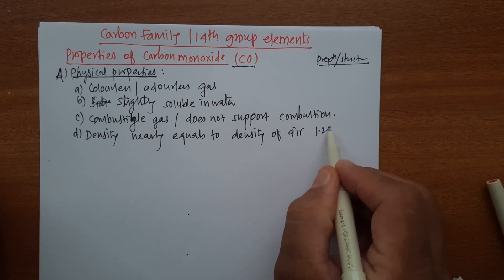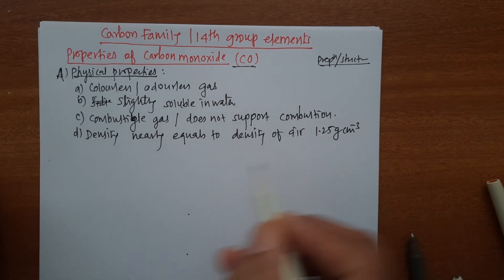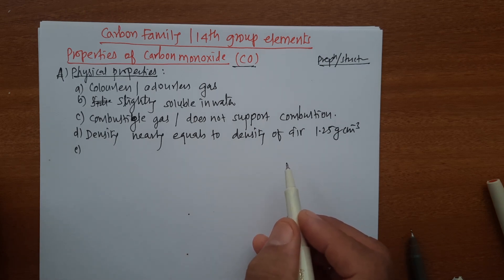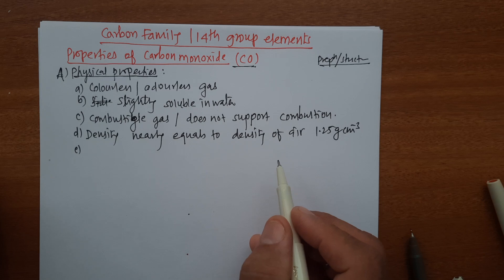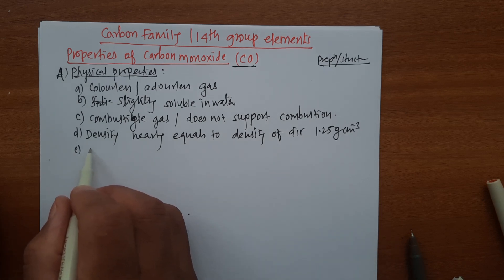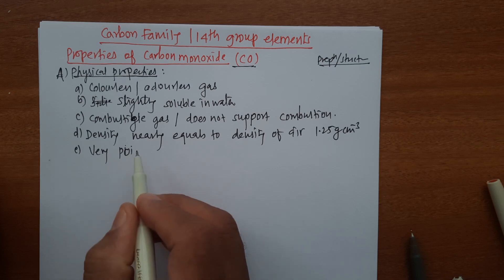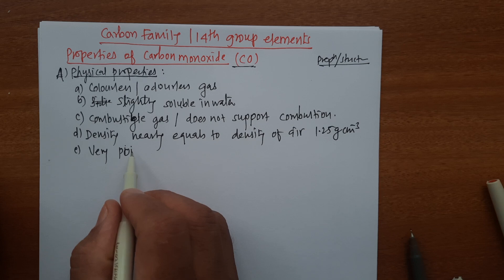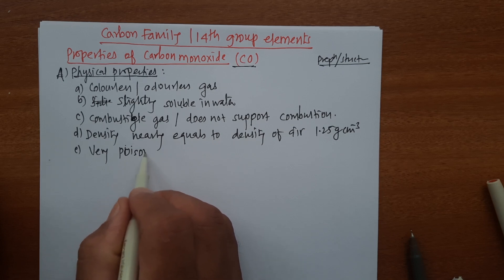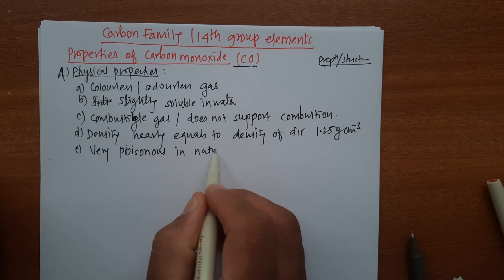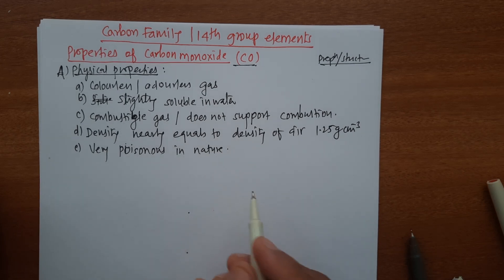The density is 1.25 grams per cubic centimeter. It is very poisonous in nature — very toxic in nature.